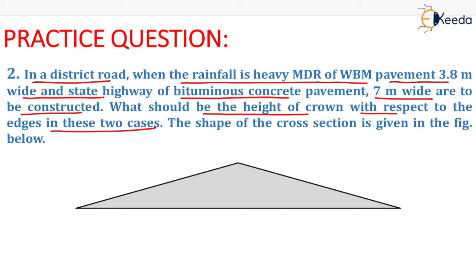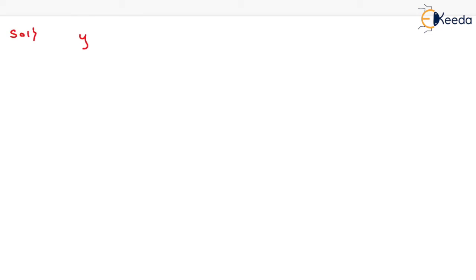The shape of the cross section is given in the figure below, that is the straight line Camber which is shown here. Now we know that for straight line Camber, the equation is y = w / 2n.